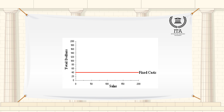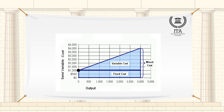A fixed cost is a cost that does not change with an increase or decrease in the amount of goods or services produced. Fixed costs are expenses that have to be paid by a company independent of any business activity. It is one of the two components of the total cost of a good or service, along with variable cost.